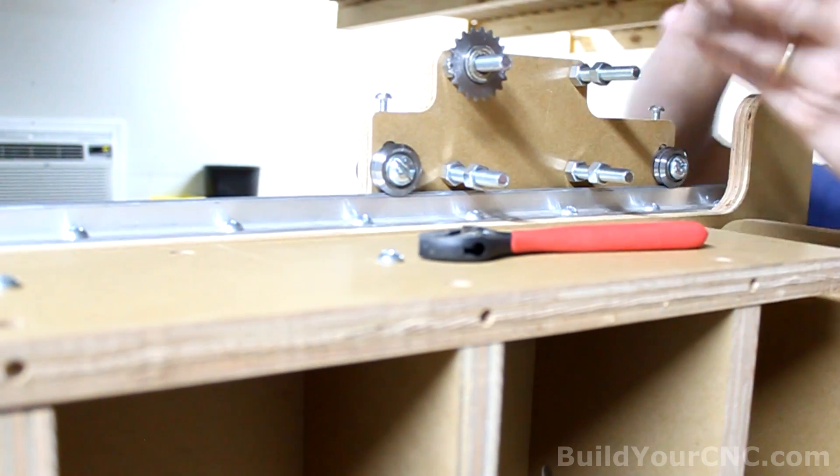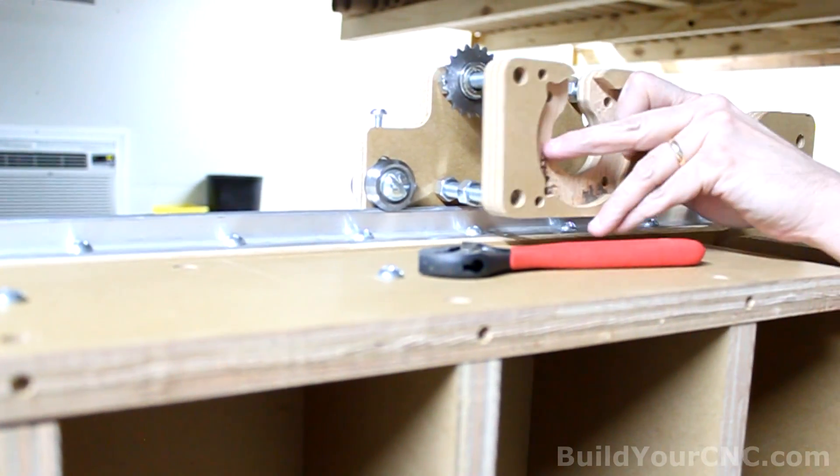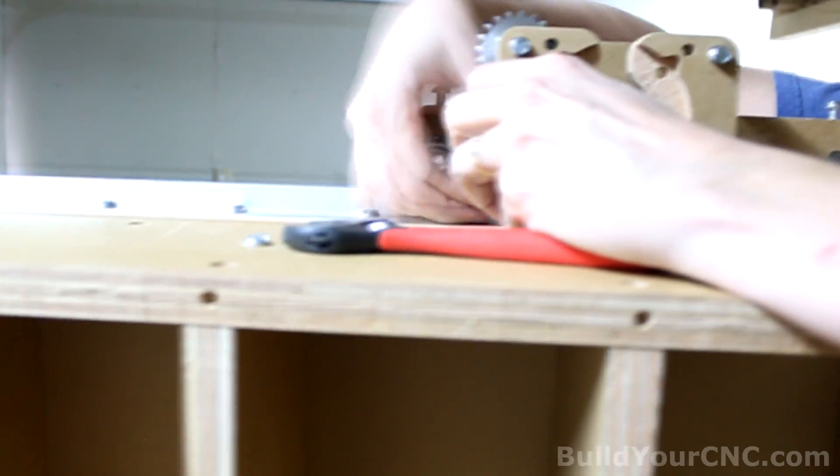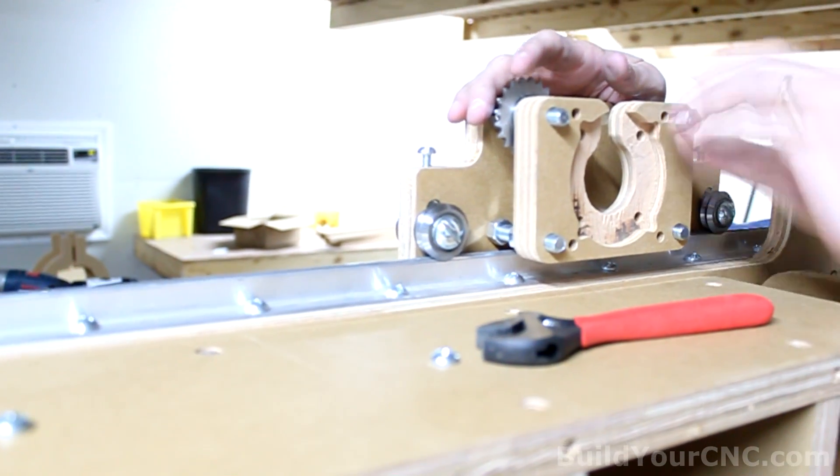Then we're going to take this piece, looks like a U, and we're going to slide this on just until these are showing. One final nut on. Do it until it's flush.